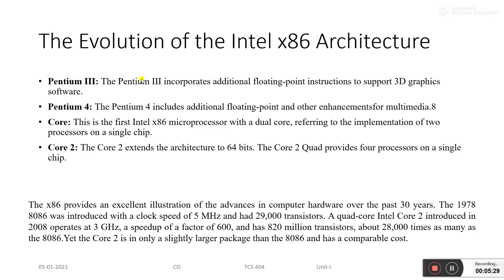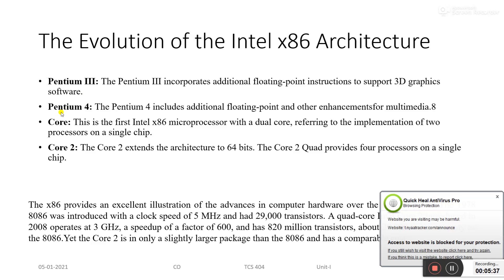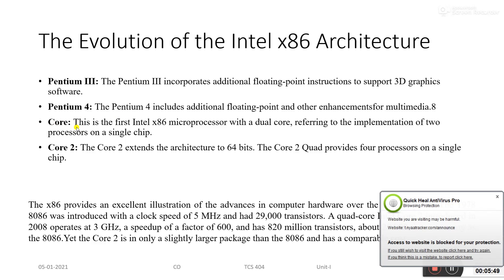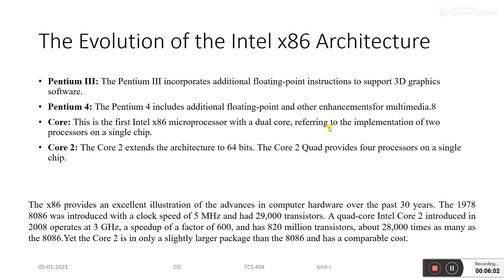Pentium 3 incorporated additional floating-point instructions to support 3D graphics, which was introduced with the Pentium 3 processor. Pentium 4 includes additional floating-point and other enhancements for multimedia. After Pentium 4, dual-core processors came into the picture. The Intel x86 Core processor has a dual core, referring to implementing two processors on a single chip. Core 2 extended the architecture to 64 bits, and Core 2 Quad provides four processors on a single chip.